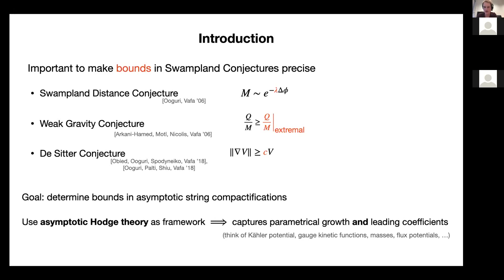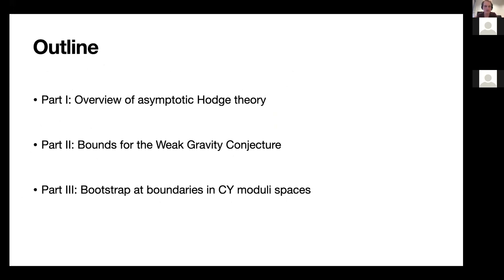Now we'll be interested in type IIb Calabi-Yau compactifications, and there actually already exists a natural framework to use that describes how physical quantities behave in these regimes — it fixes not only how they can parametrically grow or decrease as we go to the boundary, but also the leading coefficients that go together with this behavior. I'll begin with a brief overview of how this exactly works, and then I'll try to obtain some bounds for swampland conjectures, in particular for the weak gravity conjecture. For the last part I'll try to turn the story around and use this mathematical structure to constrain what we can get for two-moduli Calabi-Yau compactifications in these regimes.